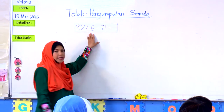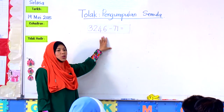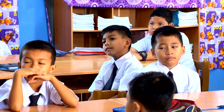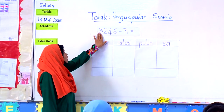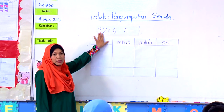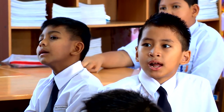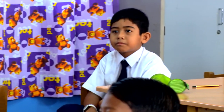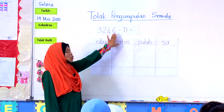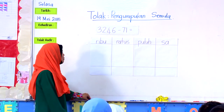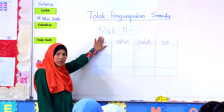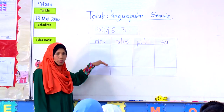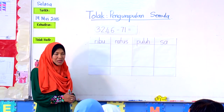Ini yang dikatakan ayat matematik. Jadi, kita akan tukar dalam bentuk lazim. Sekarang ini kamu tengok berapa nombor yang diberi: 3,246 tolak dengan 71. Daripada soalan yang diberi, kita tukar kepada bentuk lazim. Saya akan masukkan nombor mengikut nilai tempat masing-masing.